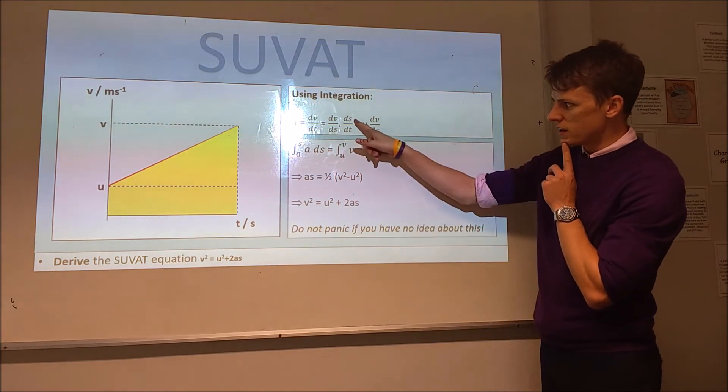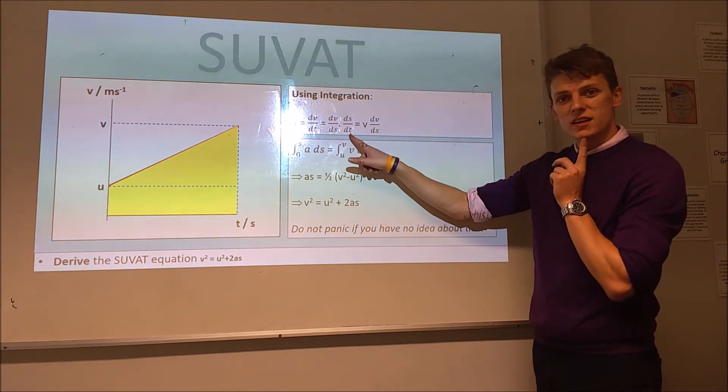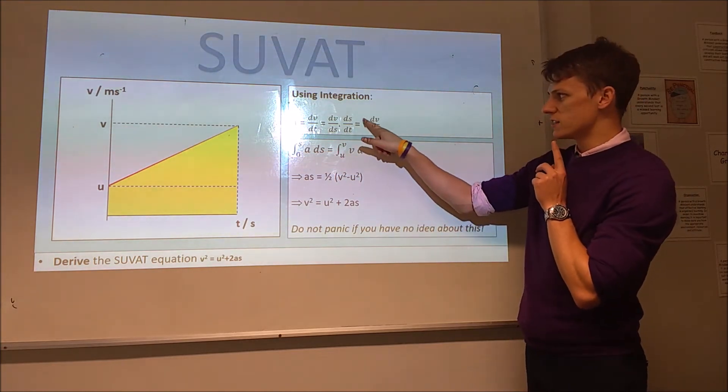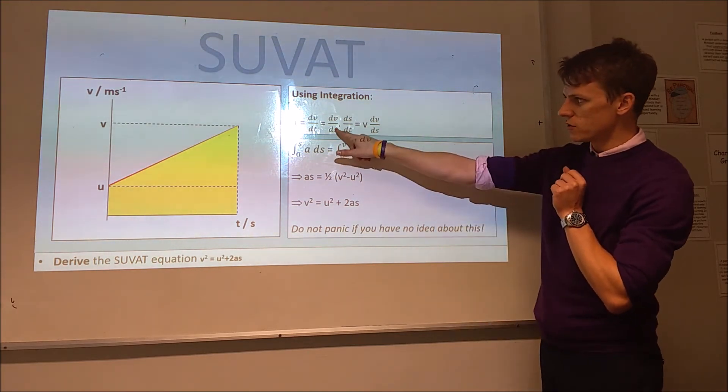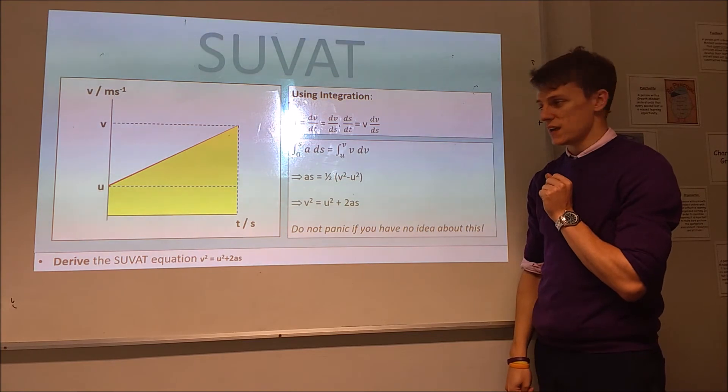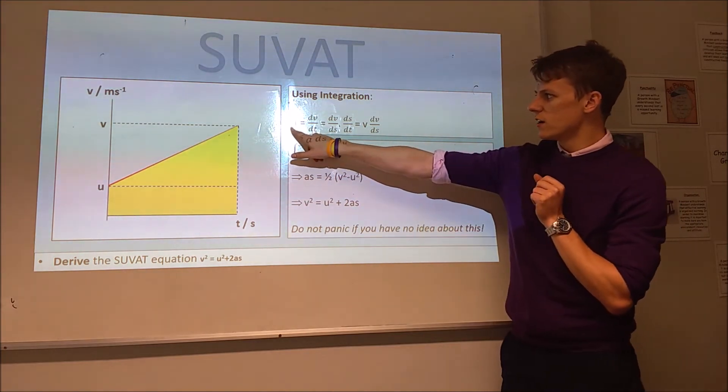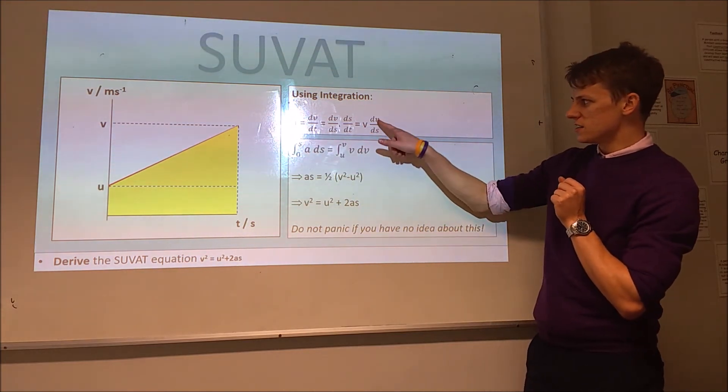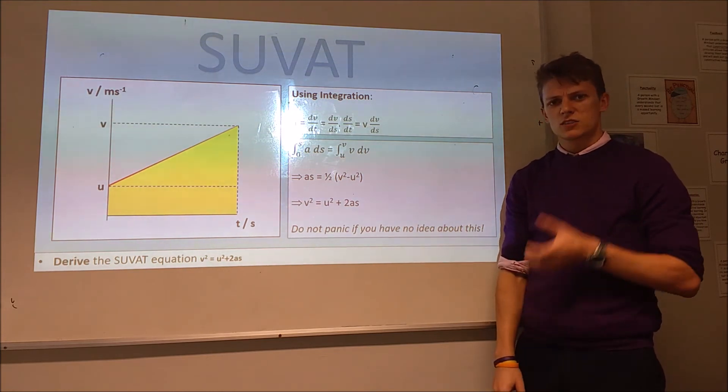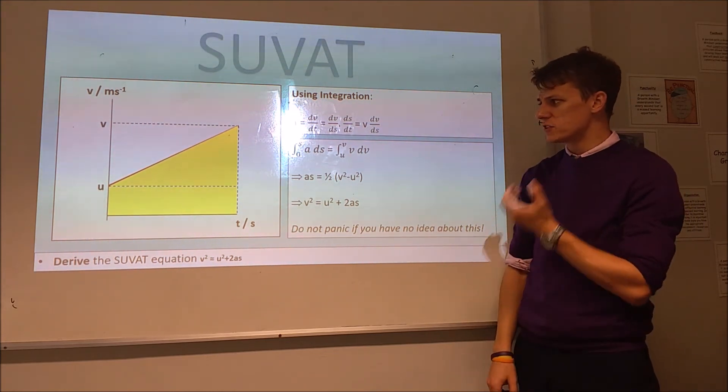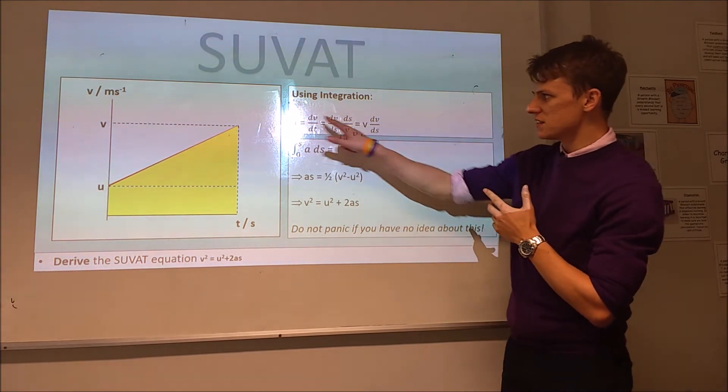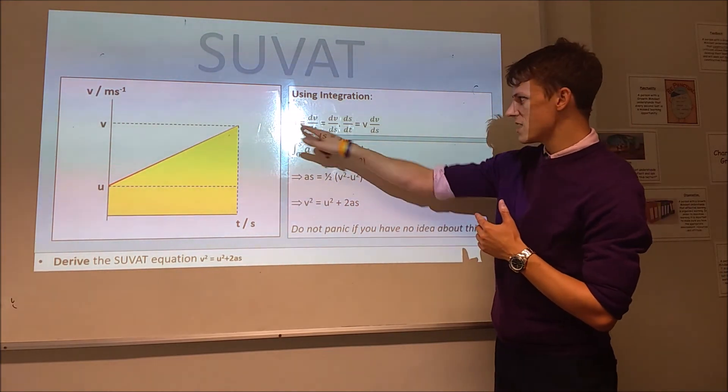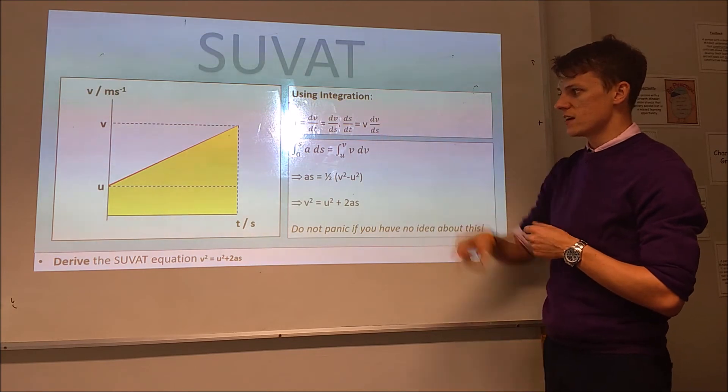So, you should know then that ds by dt is velocity, so that's why this v has come from, because that's ds by dt, and we've still then got this dv by ds term at the end. So, acceleration, we can write in as v dv by ds. So, in terms of why we've done that, so, what we can do is we can take the ds to the other side. So, we've got a ds is equal to v dv.